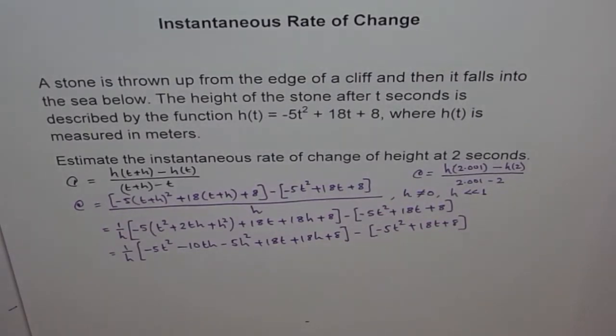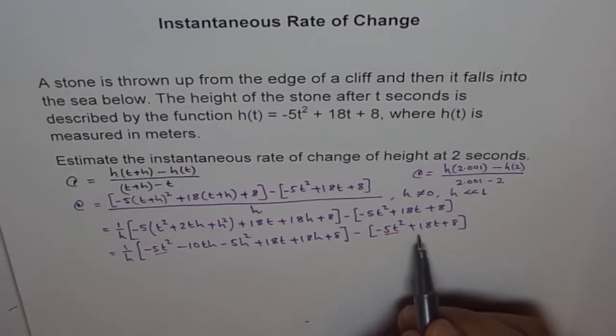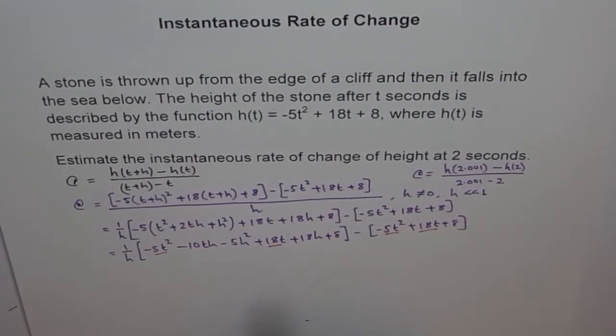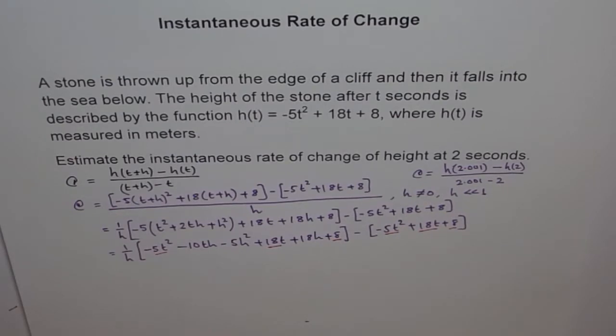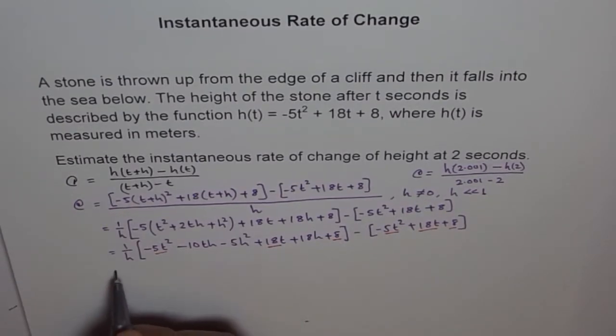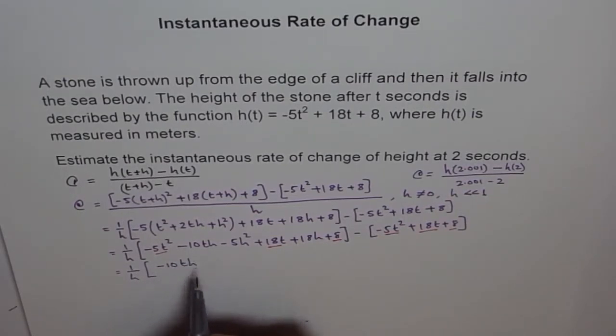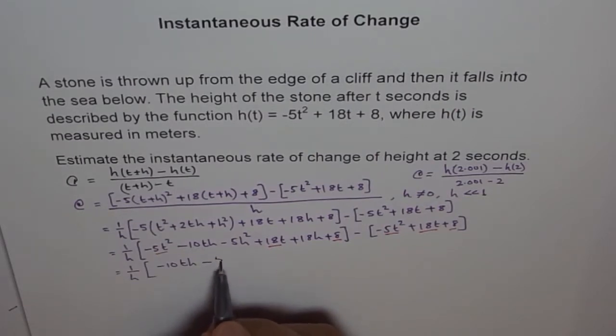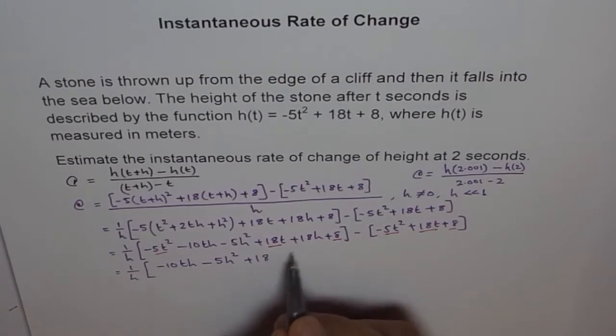Now, if you see this, we can simplify it further by, you know, this term and this term will cancel out -5t². And similarly, 18t will cancel out with 18t and 8 will also cancel out with 8 - 8 is 0. Therefore, it can be simplified as 1 over h. And here, we are left with -10th - 5h² + 18h.